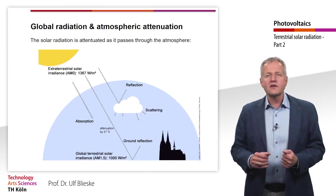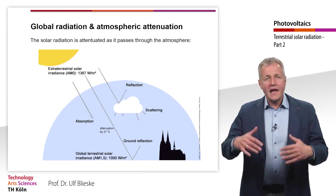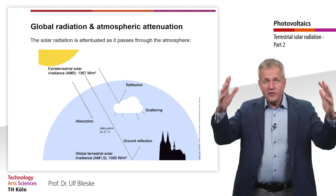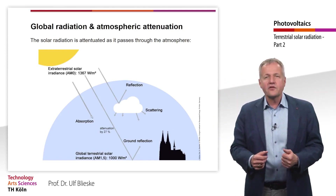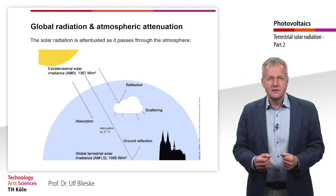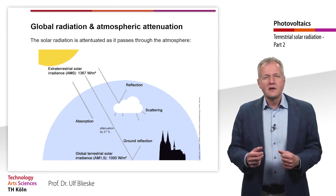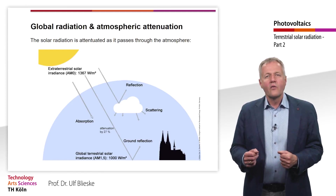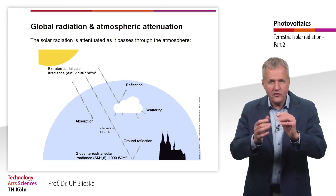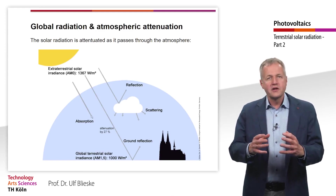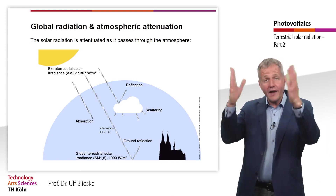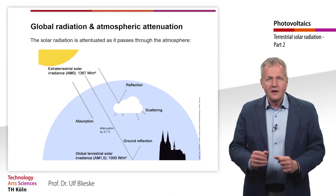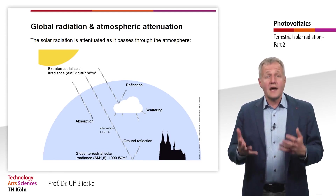In the previous teaching unit, we learned that the average extraterrestrial solar irradiation reaching the outer atmosphere of the Earth is 1367 W per square meter. These are the air mass zero, or AM0, conditions. However, when this solar irradiation enters the Earth's atmosphere, some of it will be absorbed, scattered, or reflected, meaning that the solar irradiance is reduced as it crosses the atmosphere.